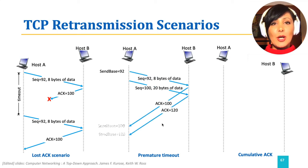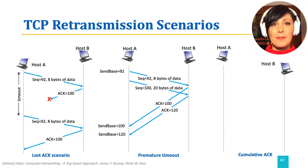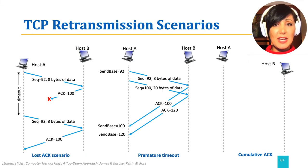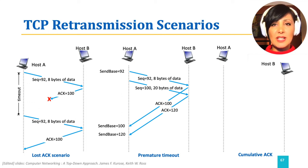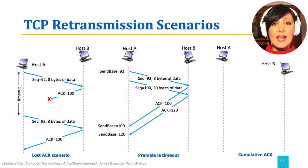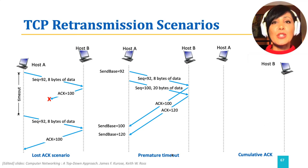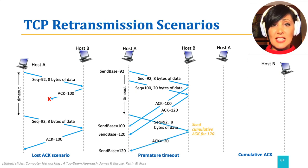The second scenario is the event of late receipt of a cumulative ACK. Let's assume the sender sends two segments: one with sequence number 92 and 8 bytes of data, and the following segment with sequence number 100 and 20 bytes of data. The corresponding cumulative ACKs are sent from the receiver side on receipt, but ACK 100 does not reach the sender before the timeout and host A sends it again.